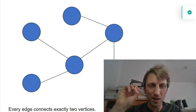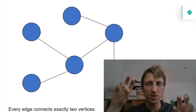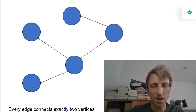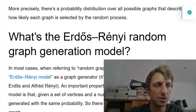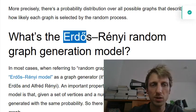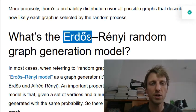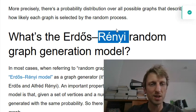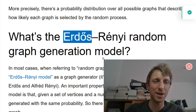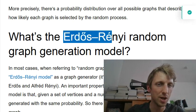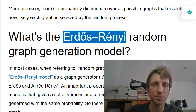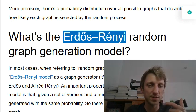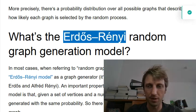In most cases when people refer to random graphs, they assume you're talking about the Erdős–Rényi random graph model. Erdős was a very famous mathematician in graph theory, and together they invented this random graph generation model, which gives us a way to generate a graph randomly from the finite number of possible graphs.